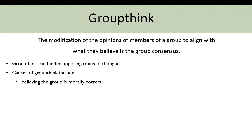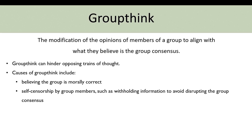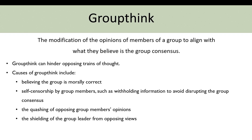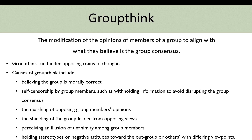Causes of groupthink include believing the group is morally correct, self-censorship by group members such as withholding information to avoid disrupting the group consensus, the squashing of opposing members' opinions, the shielding of the group leader from opposing views, perceiving an illusion of unanimity among group members, and holding stereotypes or negative attitudes toward an out-group if you're part of the in-group.